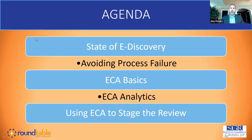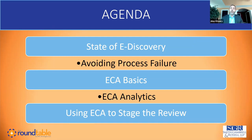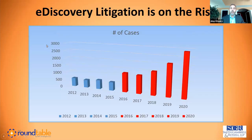We're going to start off talking a little about the state of eDiscovery right now and why ECA is more important now than ever. We're going to talk about avoiding process failure, which is one of the great benefits ECA gives. Then we'll talk about some basic tactics and some more advanced tactics in ECA, and finally wrap up with an evolving way of using ECA to stage the review in order to help limit review costs.